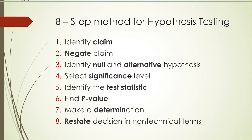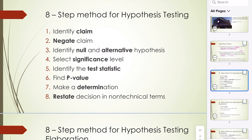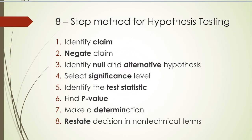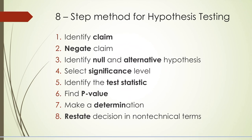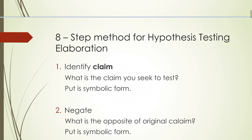Here is an eight-step method for hypothesis testing — I'm going to bookmark this. Step one: identify the claim. Step two: negate the claim and form the alternative claim. Step three: identify null and alternative hypotheses. Step four: select significance level. Step five: identify and compute the test statistic. Step six: find the p-value. Step seven: make your determination. Step eight: restate the decision in non-technical terms.